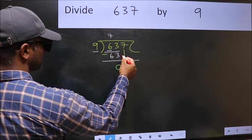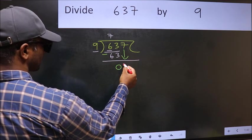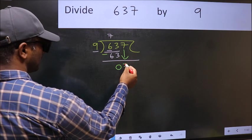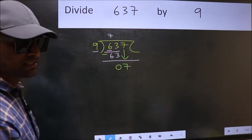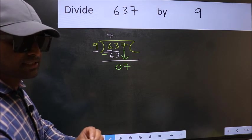After this, bring down the next number. So, bring 7 down. After this step, the mistake happens. And the mistake is this.